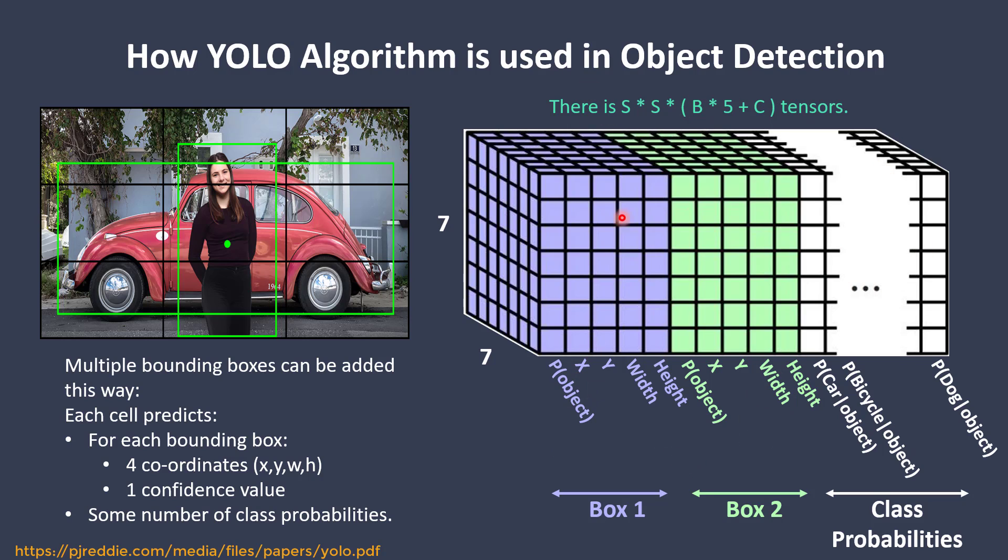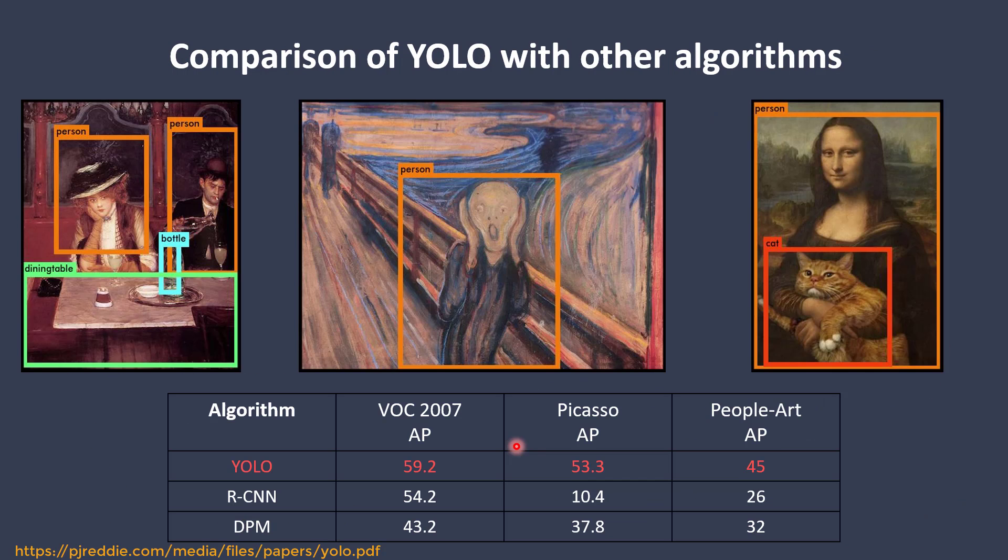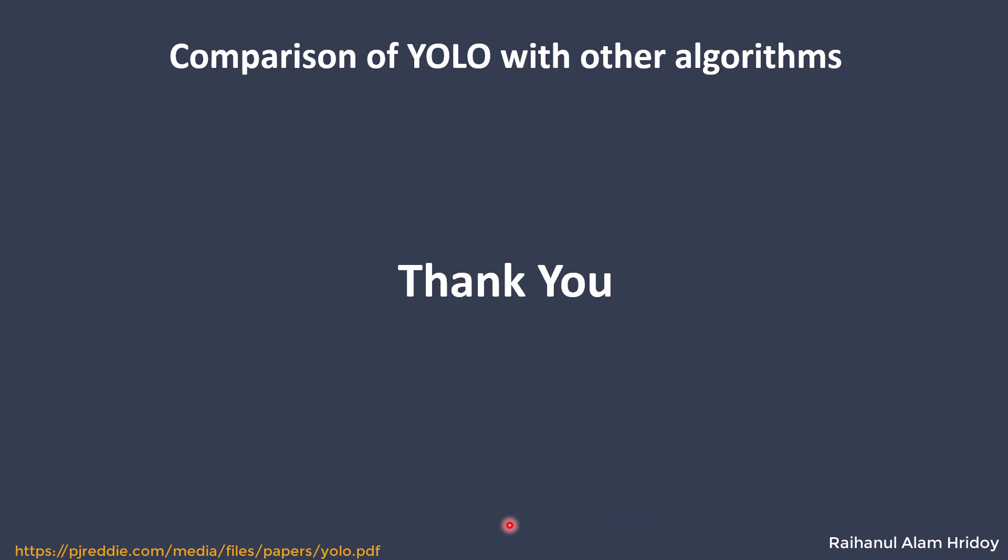Now here are some results of the YOLO algorithm with comparison with other algorithms. We can see that it outperforms methods like DPM and RCNN when generalizing to person detection in artwork. You can see YOLO algorithm is the winner while calculating the accuracy. That's it for today, thank you.